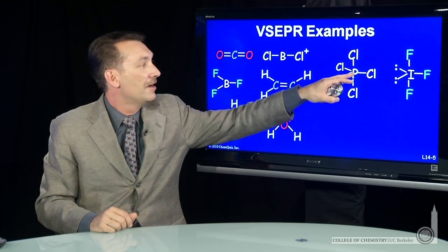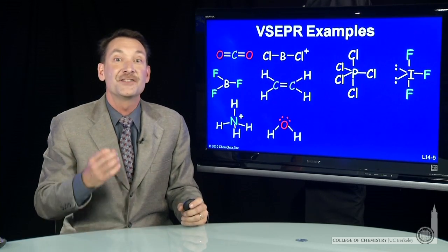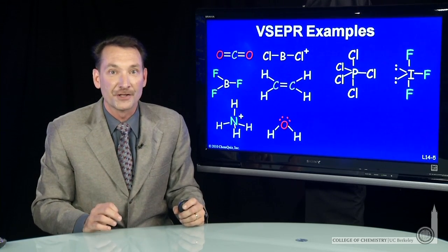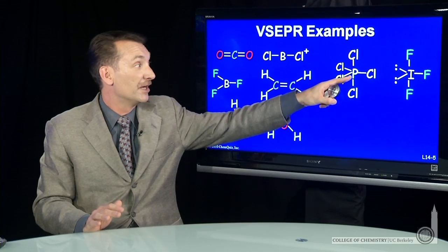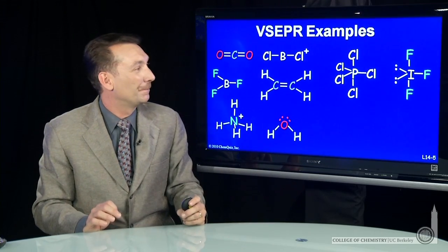An example, PCl5. Phosphorus has steric number five in PCl5. It's a trigonal bipyramidal molecule. That's quite a mouthful, but you can practice saying that trigonal bipyramidal.